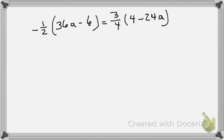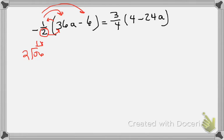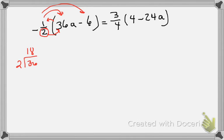So I'm going to take my one-half and multiply it to both these terms. It's quite simple: I take the 2 and divide it into 36, then multiply it to the top number. So 2 goes into 36 eighteen times, and then you multiply by negative 1, which makes it negative 1. So 2 goes into 36 and you get 18, then take 18 and multiply by the numerator which is negative 1 — so the answer is negative 18.